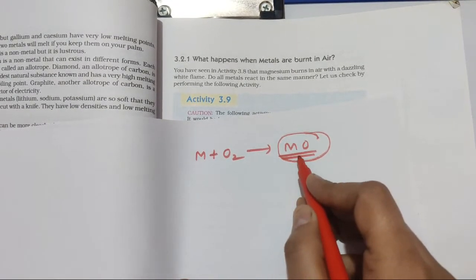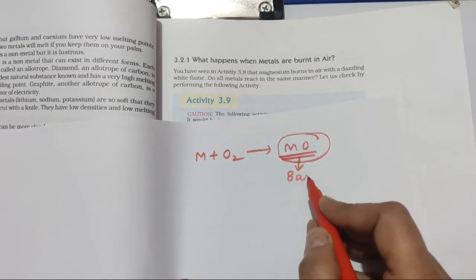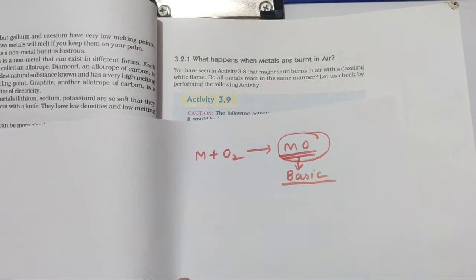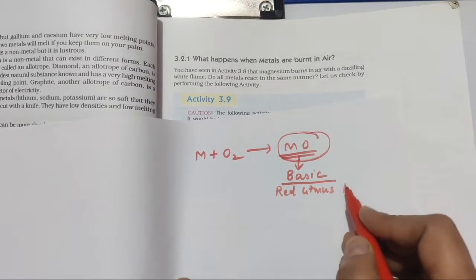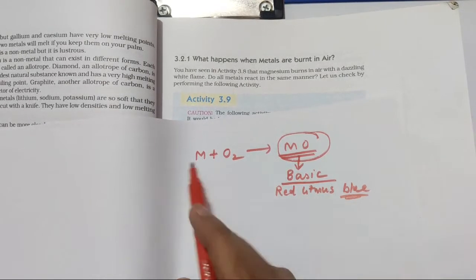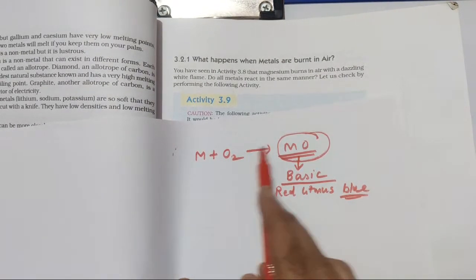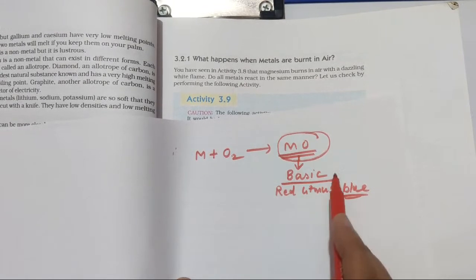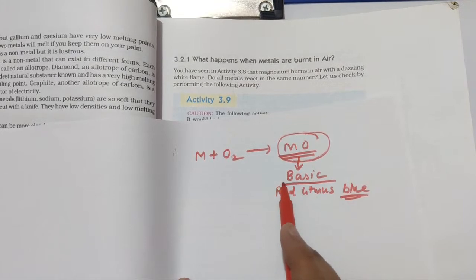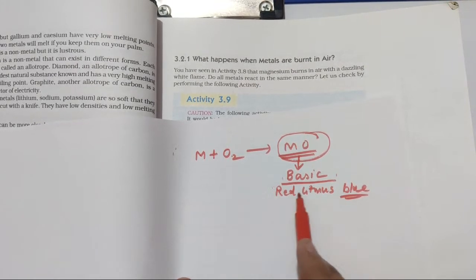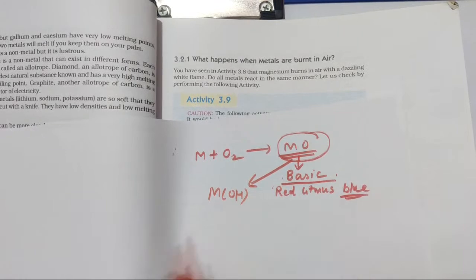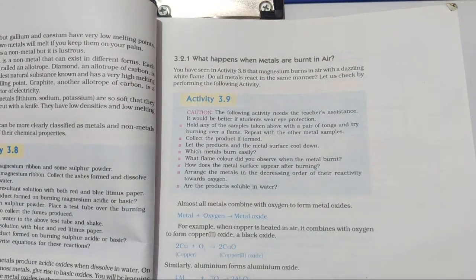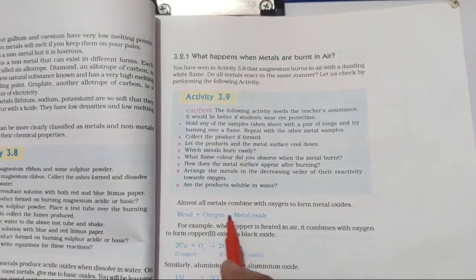The second important question that can be framed from this topic: what is the nature of metal oxide? Metal oxide is basic in nature, which means it turns red litmus blue. Metal oxide is basic in nature because when it is dissolved in water, it forms metal hydroxide.